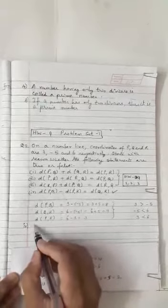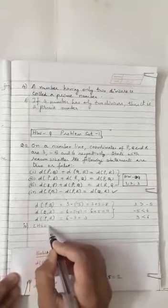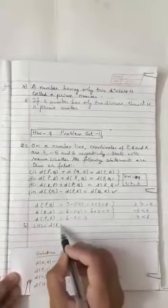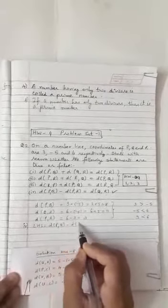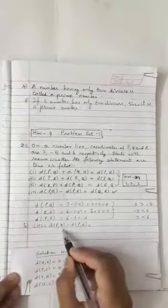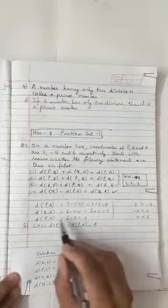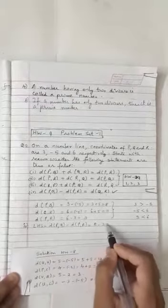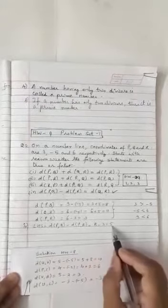Now children, what is the 4th one saying? The 4th one is saying my left hand side, what is my left hand side? Distance PQ minus distance PR. How much is PQ? 8. And how much is PR? 3. So 8 minus 3 we get as 5.